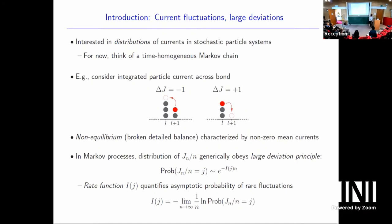In non-equilibrium systems with broken detailed balance, these systems are generally characterised by non-zero currents. If we look at the time-average current — the integrated current over n time steps divided by n — that generically obeys a large deviation principle. Very loosely, the probability that my time-average current takes some value j looks in the long-time limit like the exponential of minus a rate function multiplied by the time n. Fluctuations away from the mean become exponentially more unlikely at long times, and the rate function quantifies how fast that decays.